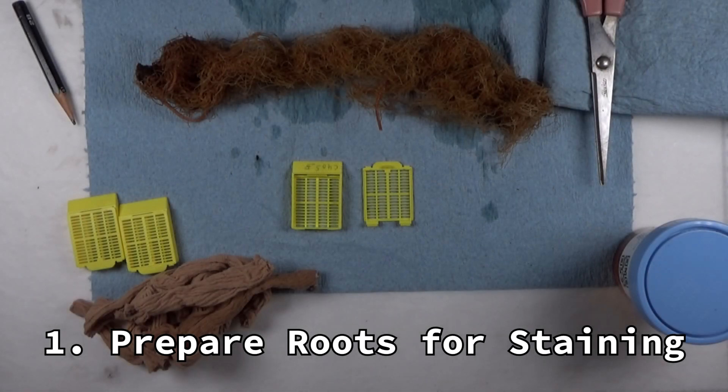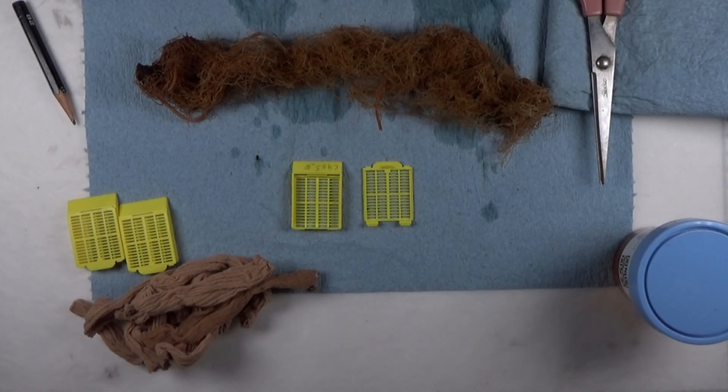The next part is preparing the roots for staining. If you stored your roots before staining them, take them out of the fixative—we used ethanol—and dry them off.